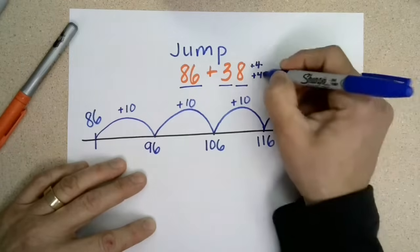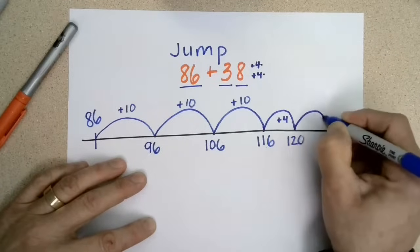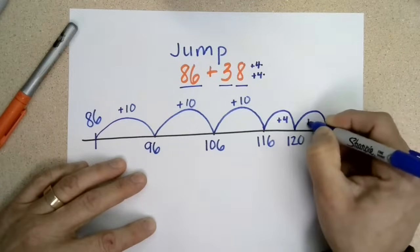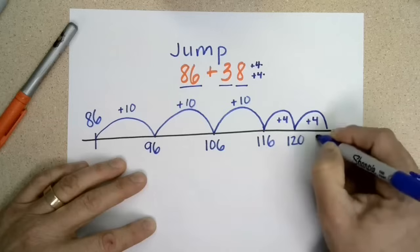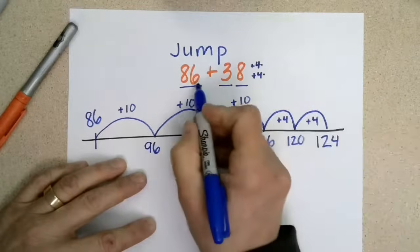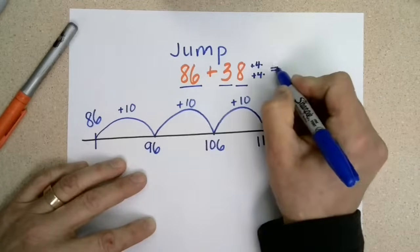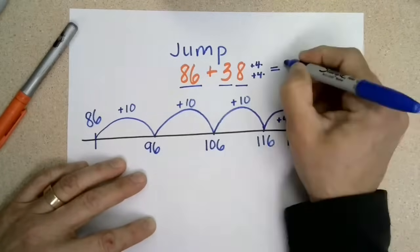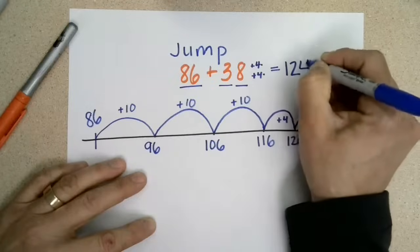Then I'm going to add my next four to get my final answer. 120 plus four is 124. So 86 plus 38 equals 124.